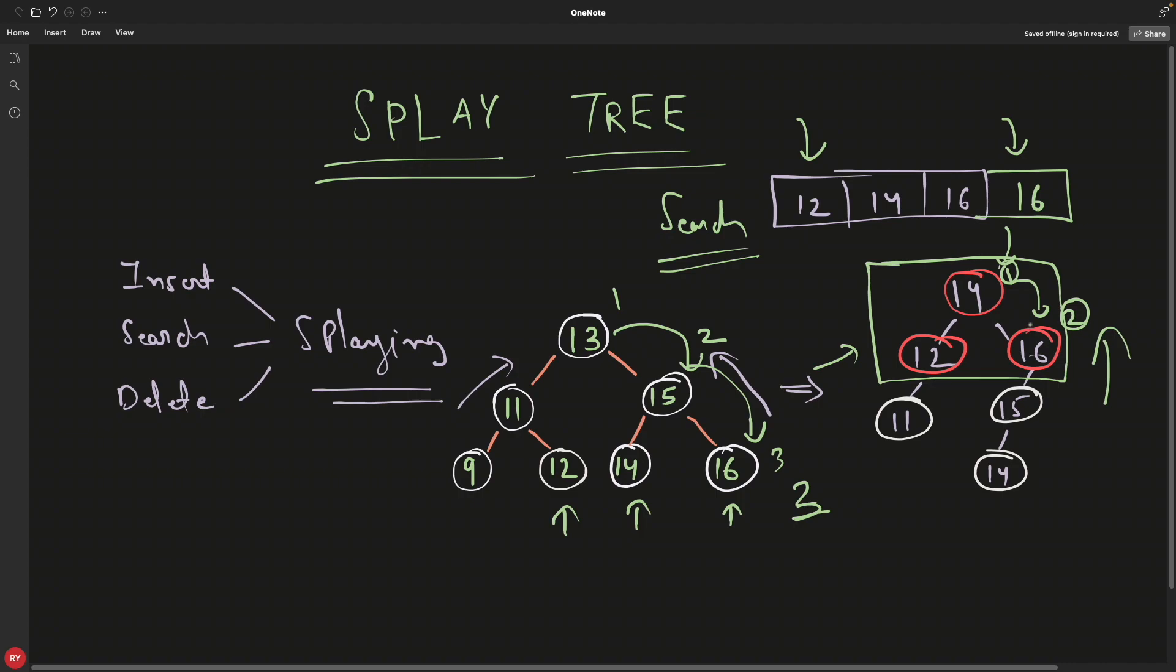Once I search this 16, 16 will somehow come here. Let's say it comes like this, and this whole tree will be arranged in some order. Notice that if I'm searching this 16 again, it is actually the root. Are you getting my point? The whole idea is whatever your search operation is doing, the possibility is that it has a repeated job, like it is searching 12, 14, and then again 14, maybe 12, 12, and 16, 16, maybe 12 again and then 14 again.